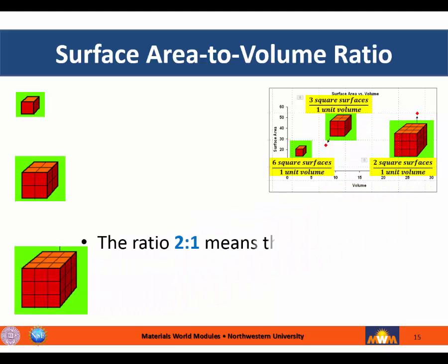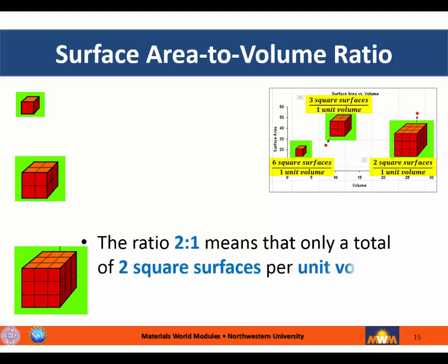The ratio of 2 to 1 for the largest cube means that only a total of two square surfaces per unit volume are exposed for interaction with its outside environment.